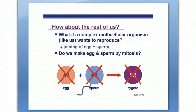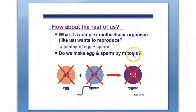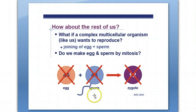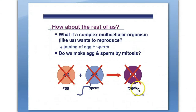What if a complex multicellular organism like us wants to reproduce? Well, we have to join sperm and egg. How do we make sperm and egg? Is it by mitosis? Well, if the egg had 46 chromosomes and the sperm had 46 chromosomes, we would have a zygote or a fertilized egg with 92 chromosomes, and that doesn't work out for us.